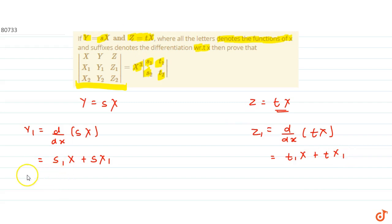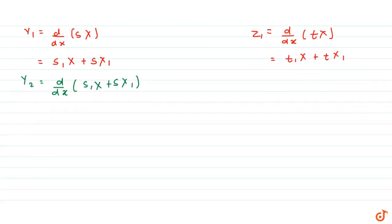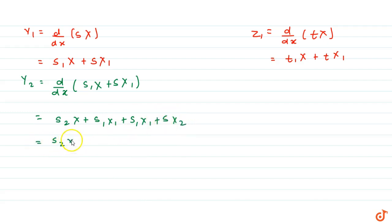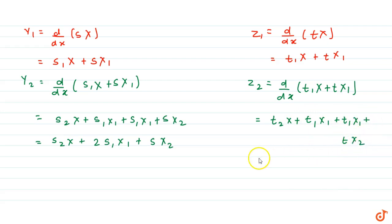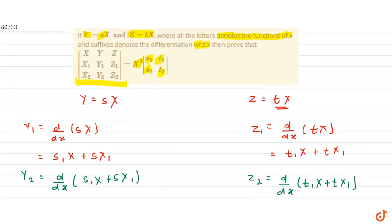Now calculate y₂, which equals d/dx of y₁ = s₁·x + s·x₁. Simplifying: s₂·x plus s₁·x₁ plus s₁·x₁ plus s·x₂, which equals s₂·x plus 2s₁·x₁ plus s·x₂. Similarly, z₂ equals d/dx of z₁, giving t₂·x plus 2t₁·x₁ plus t·x₂.